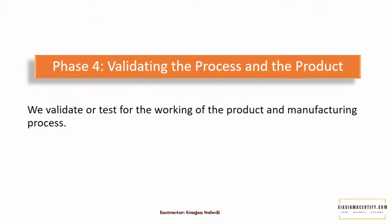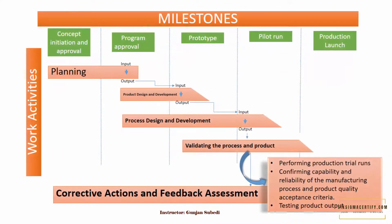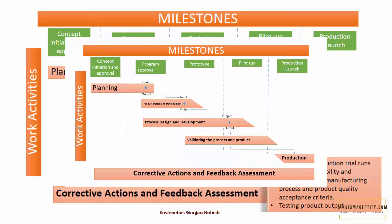Phase 4 is the phase for validating the process and the product. This is the phase where we validate or test the working of the product or manufacturing activities. Activities conducted in this phase include performing production trial runs, confirming capability and reliability of the manufacturing process and product quality acceptance criteria, and testing product output to confirm the effectiveness of the deployed manufacturing approach. The quality tools used in this phase are Statistical Process Control (SPC), Measurement System Analysis (MSA), and process capability studies.